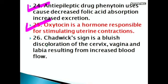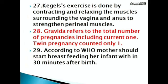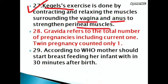Chadwick's sign is a bluish discoloration of the cervix, vagina, and labia resulting from increased blood flow. Kegel's exercise is done by contracting and relaxing the muscles surrounding the vagina and anus to strengthen the perineal muscles.